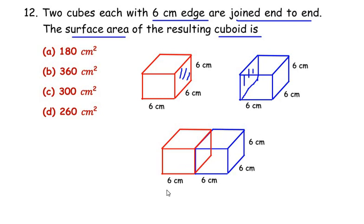Here we have a changed length. The length of the cuboid is going to be 6 plus 6, that is 12 cm. The width is going to be 6 itself, as the cube was, and the height is also going to remain the same, which is 6. So only the length is changed from 6 to 12 after joining the two cubes.